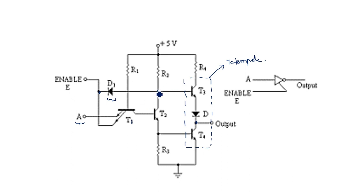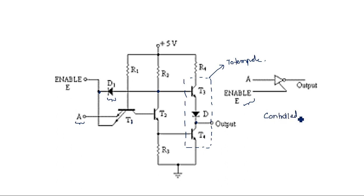Now let us see the operation — how it acts as a tri-state TTL. It is actually acting as an inverter but with a controlling signal E, the enable. So it is a controlled NOT gate. When enable is equal to 1 it acts as an inverter; when enable is equal to 0 it does not act as an inverter and the output may be in high impedance state.